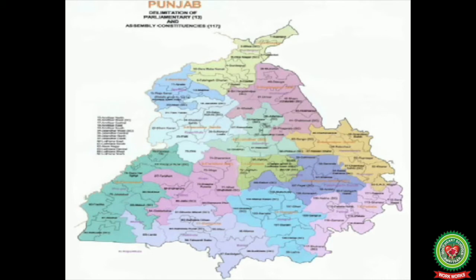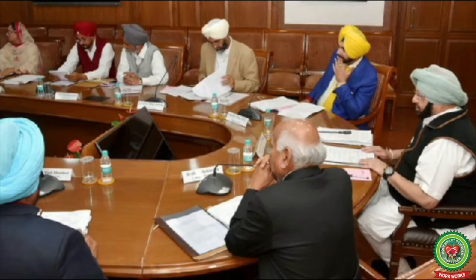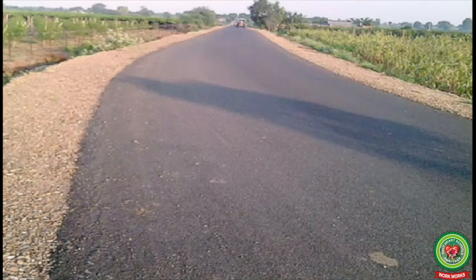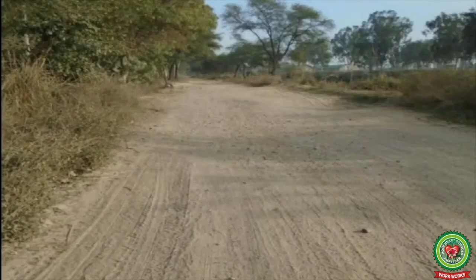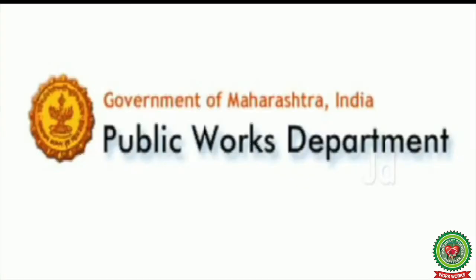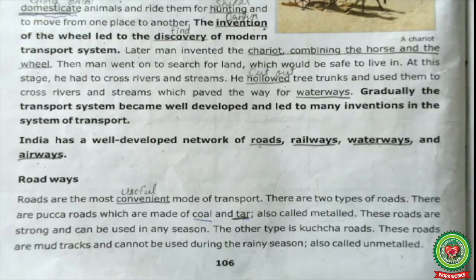State highways connect different cities within the country and are built and maintained by the state authority. District roads connect villages and towns. We can also find unmetalled or kacha roads here. District roads are constructed and maintained by the State Public Works Department or Zilla Parishad. Now let's start reading from the book.